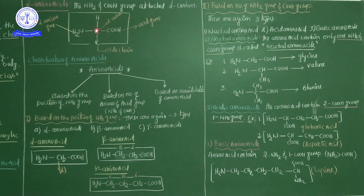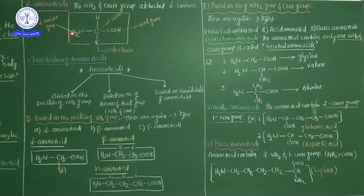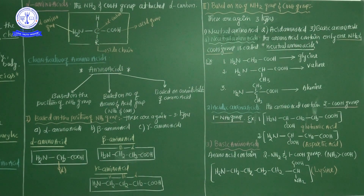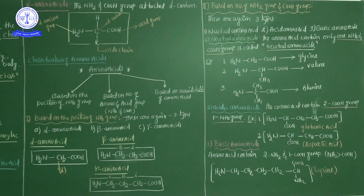See here — this is the alpha carbon. On the right side, the principal functional group COOH is present. On the left side, the amino group NH2 is present. R represents the side chain, and hydrogen is also attached. This is the structure of the alpha amino acid: the NH2 group and COOH group are directly connected with a single carbon — that amino acid is called alpha amino acid.